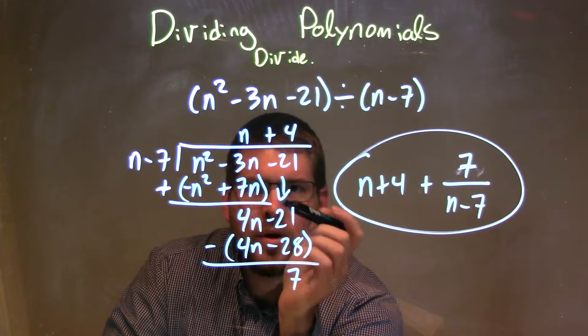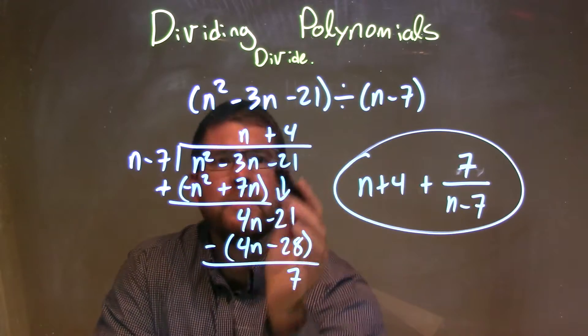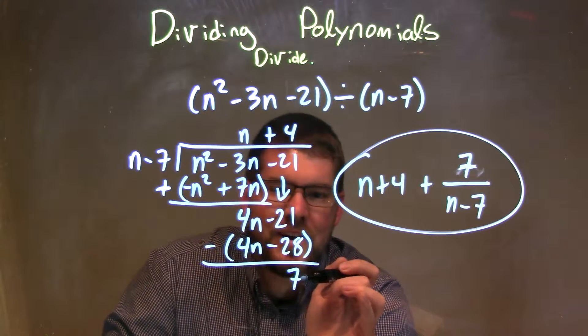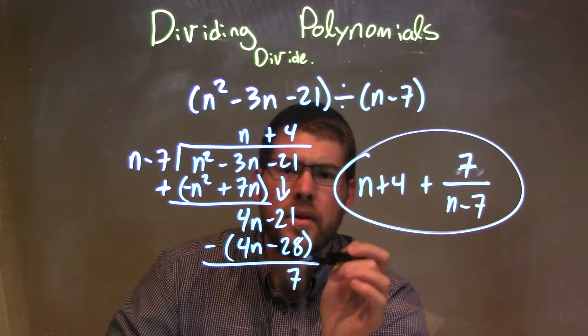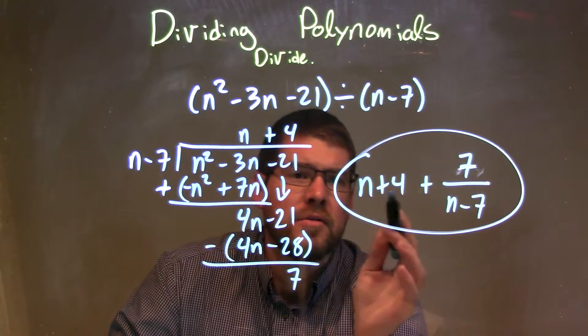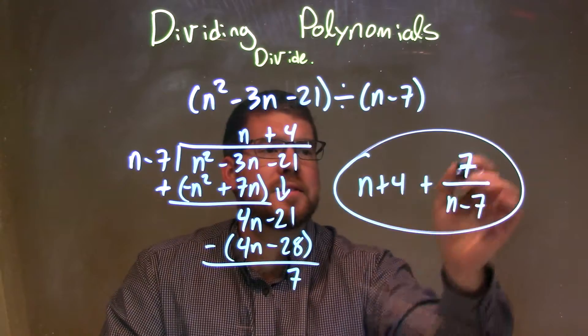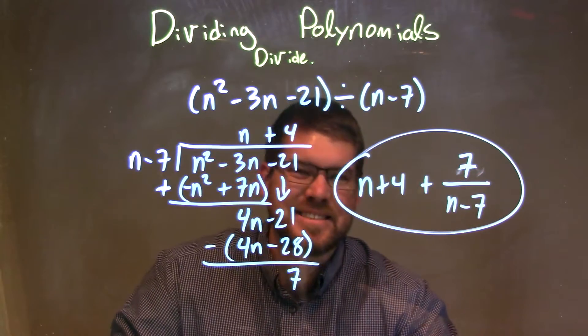When I subtracted them, I got 4n. I brought down the minus 21 and said, okay, what times n gives me 4n, that's 4, so I multiplied 4 times both of these, and I subtracted them, giving me a final thing here, 7, a remainder. So my remainder is 7. So now I can write my final answer, my n plus 4, which is written right up there, plus 7 over my divisor, n minus 7.